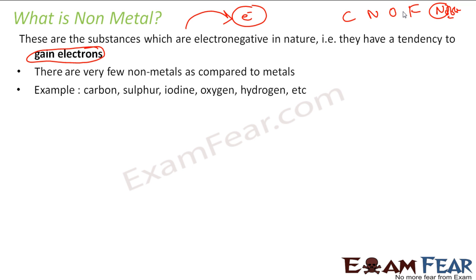For example, carbon, sulfur, oxygen, hydrogen, etc. But if you see, 50% of the earth is oxygen only. One particular non-metal is 50% of the earth. Hydrogen and oxygen are the major constituents of the ocean. So non-metals are less in numbers, but they are more in quantity. Most of the things around us are non-metals, but the number of non-metals are less.